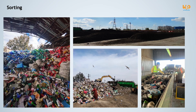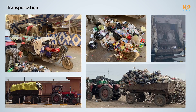Both formal and informal sorting takes place in Megalopolis. On the left, you can see how an apex trader has organized the plastics he bought by colour. On the right, you can see the windrows of compost, which is an output of the mechanical biological treatment plant. All sorts of collection vehicles are used in Megalopolis, mainly tricycles, tractors, and compactor trucks. Although compactor trucks are closed, the tractors and tricycles are mostly open — you can notice how waste is well contained in the compactor truck, while waste collected by the tricycle is mostly loose.